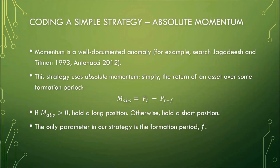The strategy we're going to code today is based on absolute momentum, which is probably the most well-documented market anomaly. There's some research I've referenced that I recommend you check out if you're not familiar with it. Absolute momentum is essentially the momentum of a single asset price over some formation period — simply the price at the current period minus the price some time ago, where that time is the formation period.